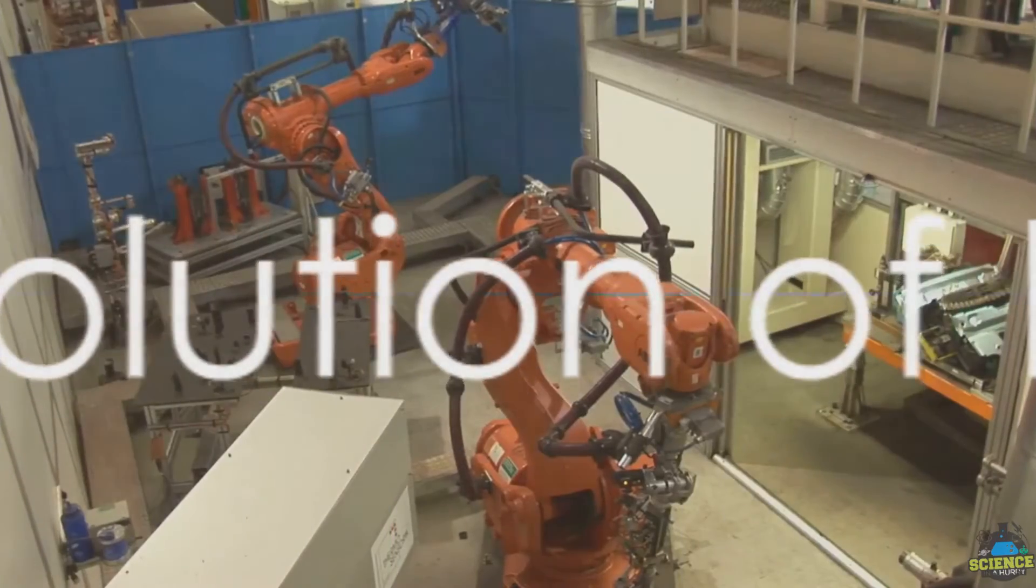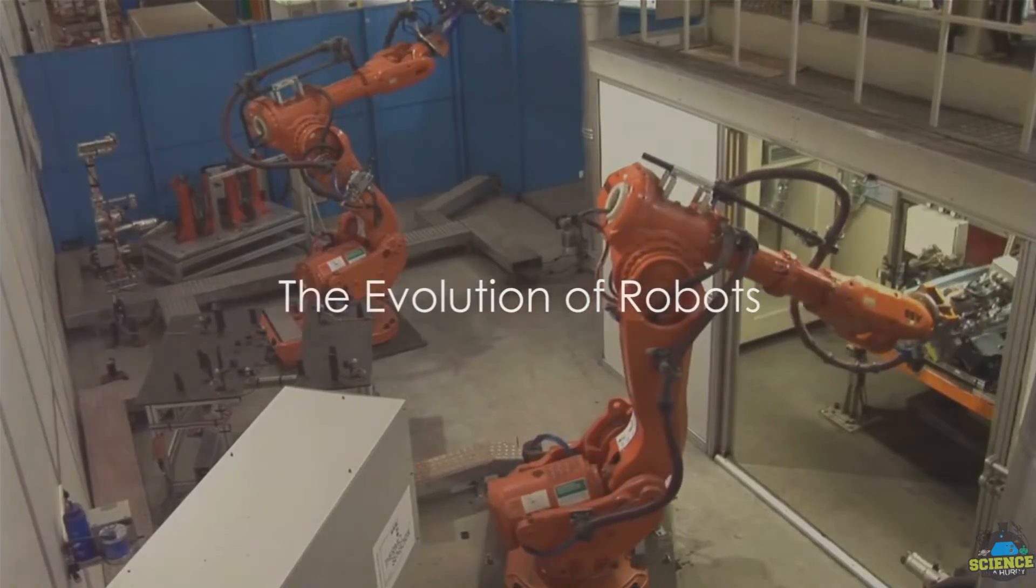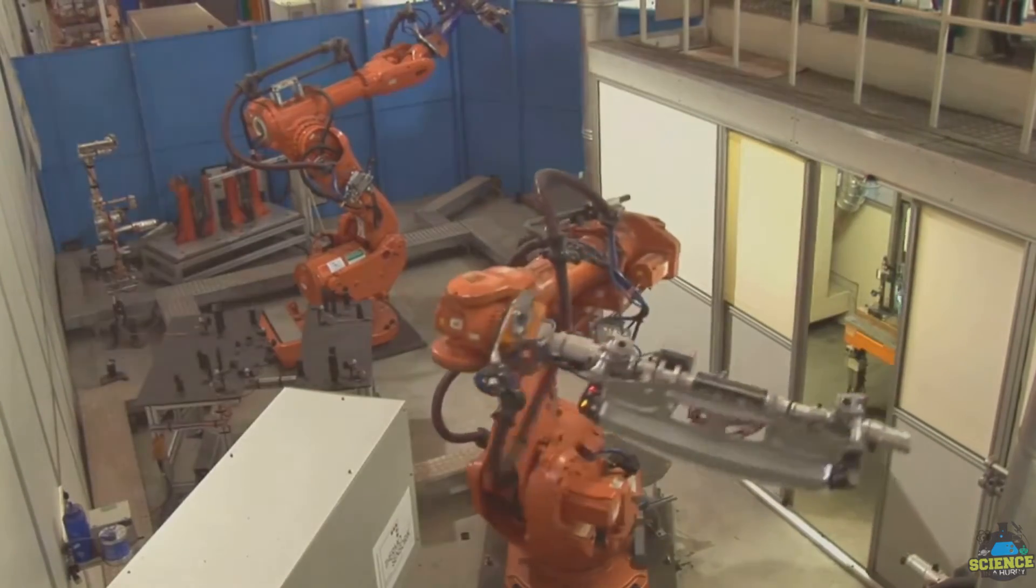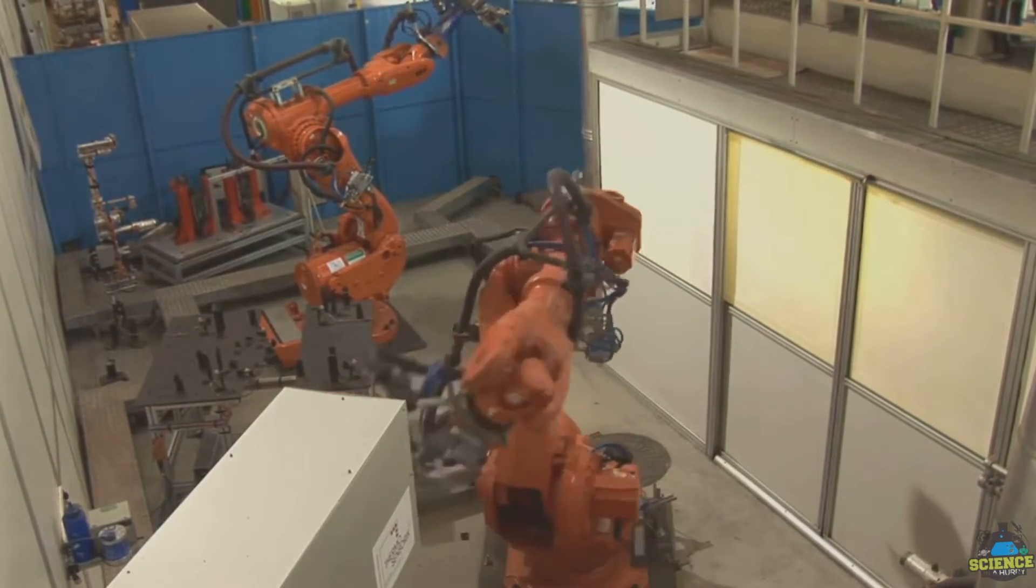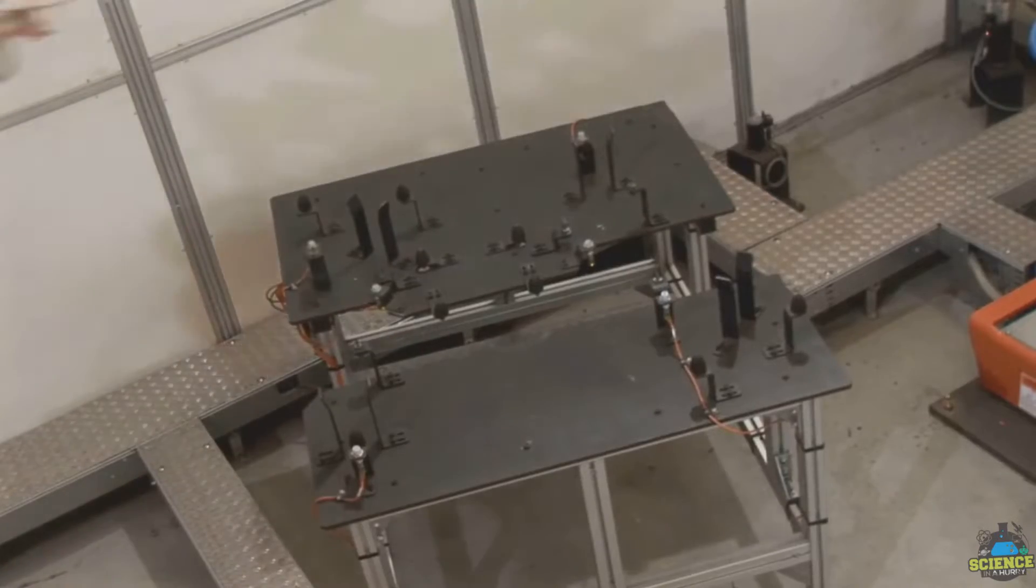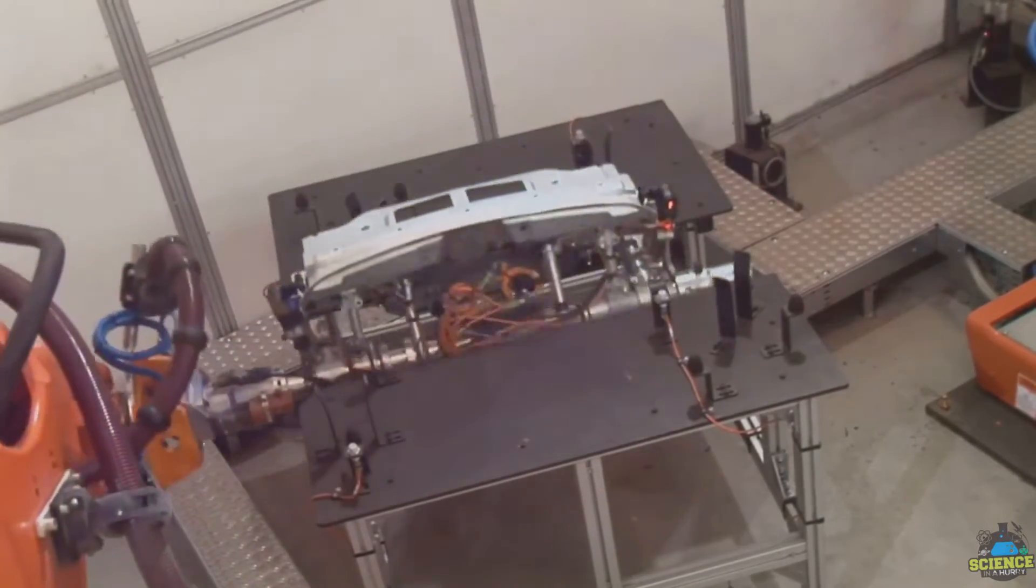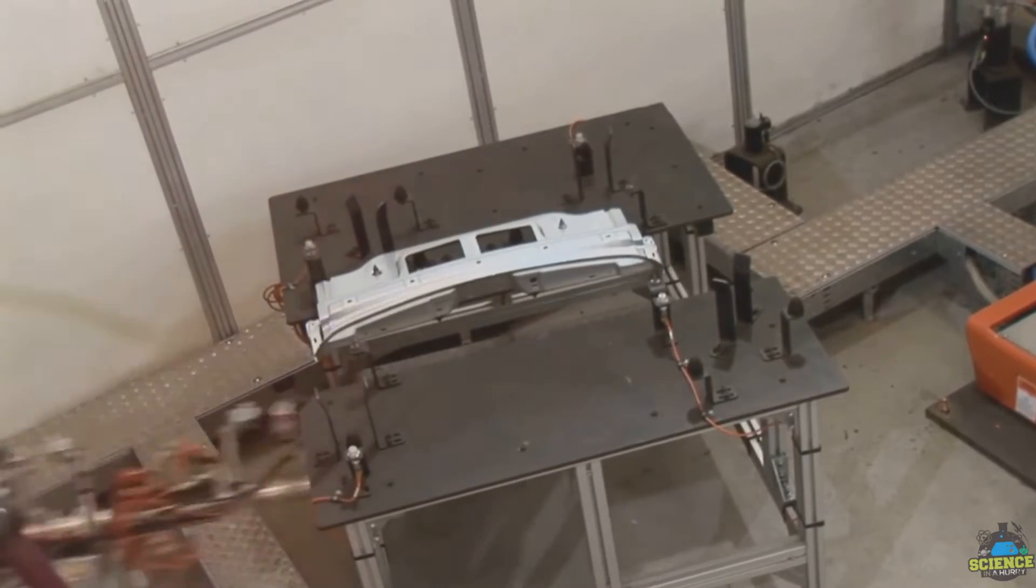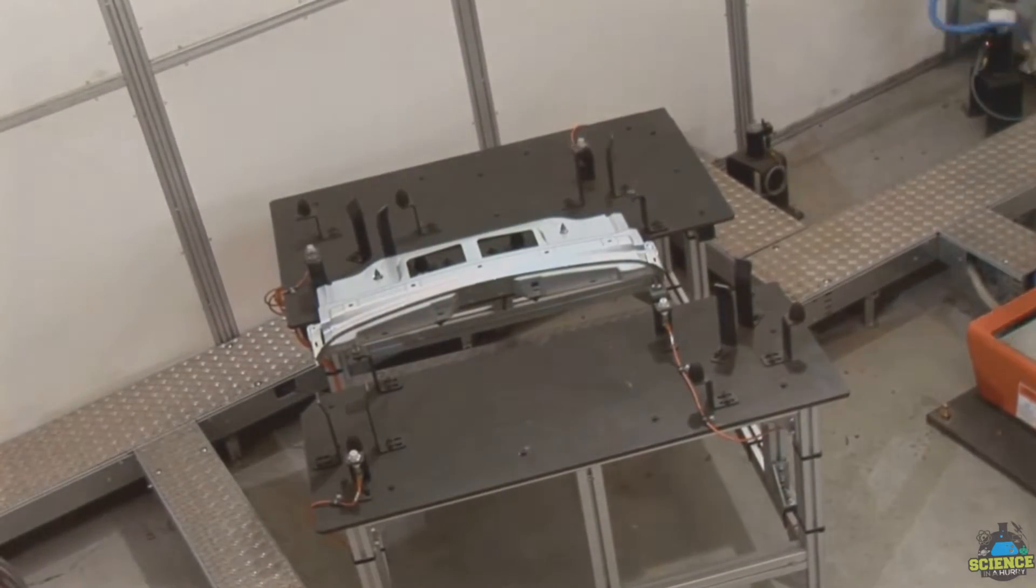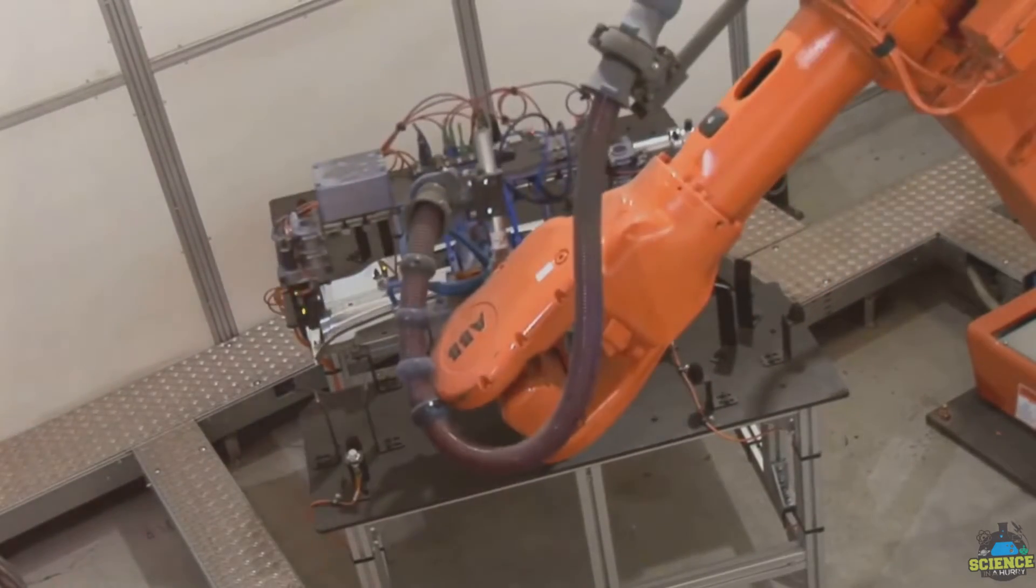The journey of robots from the realm of science fiction to our everyday reality has been a fascinating one. It all began in the mid-20th century when the first industrial robot, Unimate, made its debut on the General Motors assembly line. This mechanical marvel sparked a revolution, setting the stage for the automation of repetitive tasks in industries worldwide.